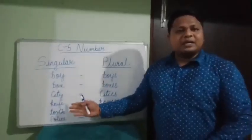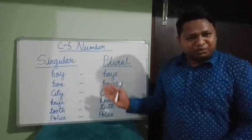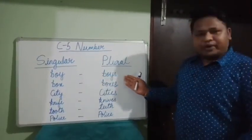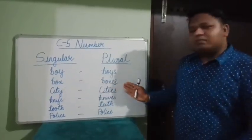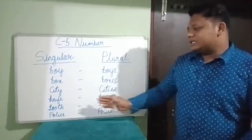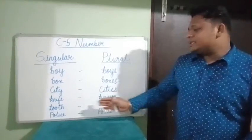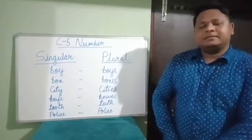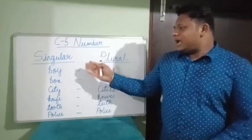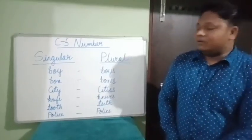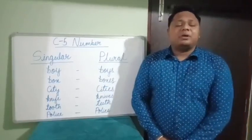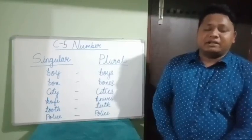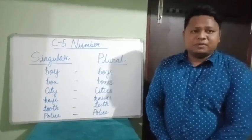Now let us have some singular nouns and their plurals. For boy, it is boys; box, boxes; city, cities; knife, knives; tooth, teeth; police, police. Looking at these singular and their plural forms, the question comes to our mind: how can we make the plural of any singular noun? Is there any rule for it? Because here we can see that there are different ways of making plurals of singular nouns.